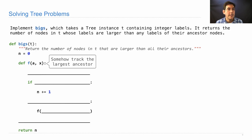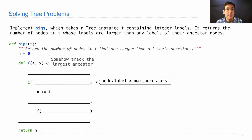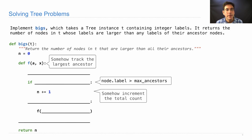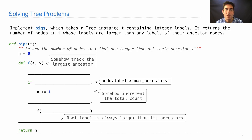It's still the case that I somehow track the largest ancestor by introducing a helper function. It's still the case that I have an if statement that implements this same comparison: is the current node's label larger than any of the ancestor labels? Incrementing the total count is different — here we're explicitly incrementing some variable n that's part of bigs. We still need some place to say that the root label is always larger than its ancestors.